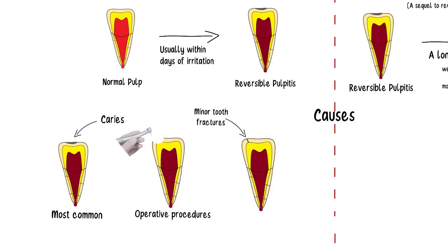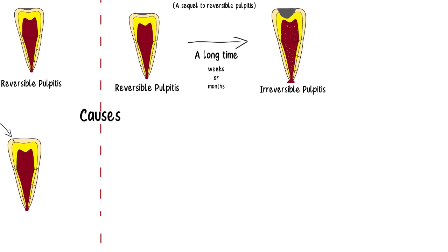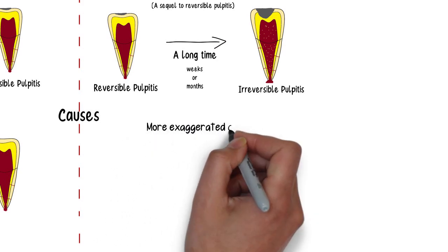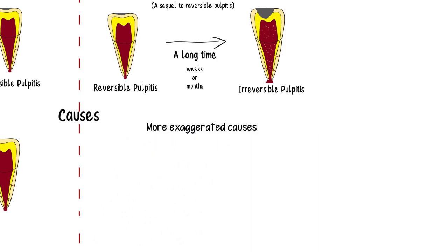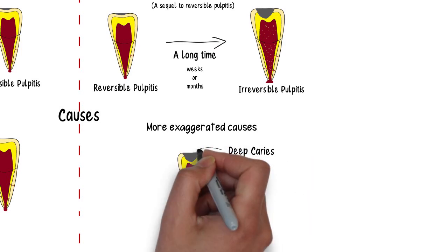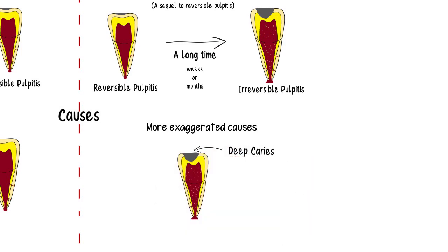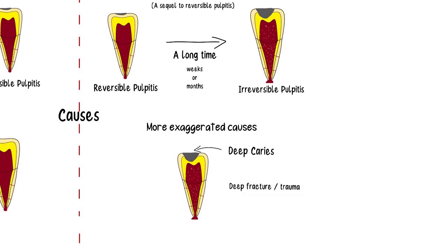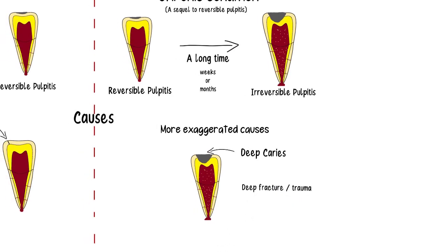Causes of irreversible pulpitis are just a more exaggerated form of those of reversible pulpitis. If the caries progresses deep enough, it will cause the pulp to get irreversibly inflamed. Similarly, if the trauma is deep enough or the dentine has been exposed for a very long time, the pulp can get irreversibly inflamed.